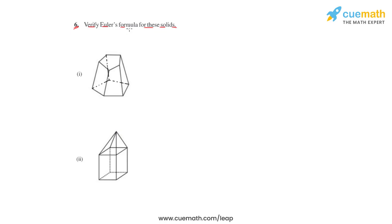Now we all know that Euler's formula for any polyhedron is given by this equation which is F plus V minus E equals 2, where F stands for the number of faces in the solid, V stands for the number of vertices in the solid, and E stands for the number of edges in the solid.